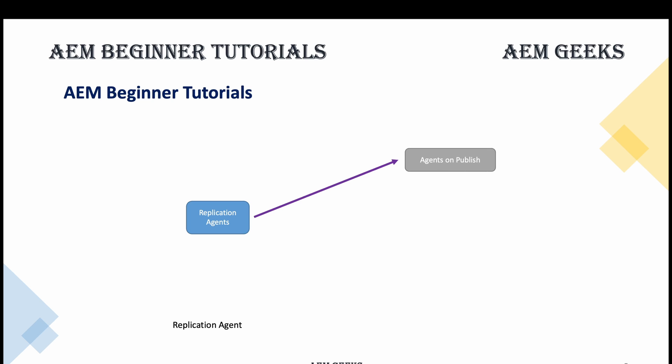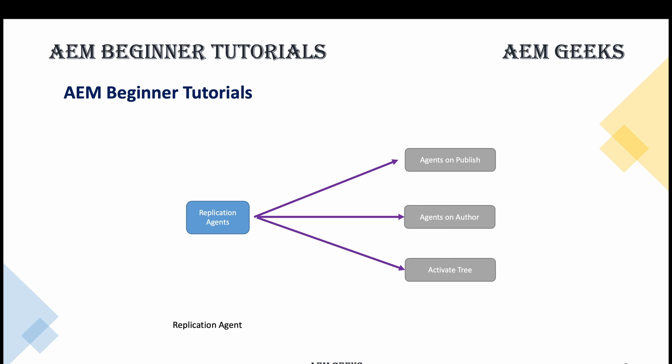When talking about replication agents, there are three things to know: agents on publish, agents on author, and activate tree. Since you typically won't have direct access to the publish instance, any agents you need on publish are created on author first and then moved to the publish instance. For example, if you create a flush agent to clear or invalidate your dispatcher cache, you can create that agent on author and push it to publish.